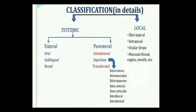In the parenteral route, parenteral refers to any route of administration that does not involve the gastrointestinal tract — so any route other than the GIT falls under parenteral. Parenteral includes injections and inhalation drugs. Under injections: intravenous (into veins), intramuscular (into muscles), subcutaneous (under the skin), intra-arterial (directly into arteries), intra-articular, intrathecal (into the spinal cord), and intradermal. All these injection types fall under the parenteral classification.